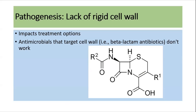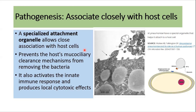There are several factors responsible for the pathogenesis of Mycoplasma pneumoniae. The first factor is the lack of a rigid cell wall. Because this bacterium lacks a cell wall, antimicrobials that target the cell wall, such as beta-lactam antibiotics, are not effective against Mycoplasma.